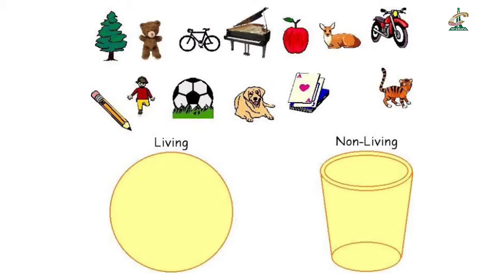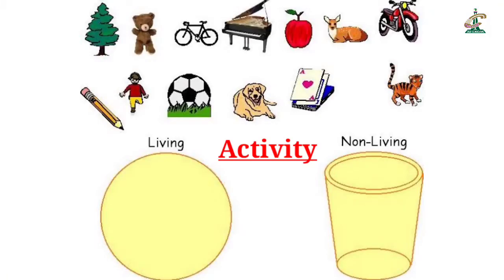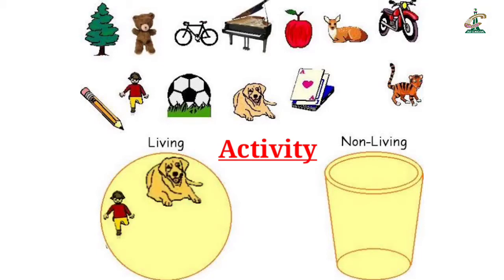You can see this picture. ہم اب ایک activity کریں گے جس میں ہم living things اور non-living things کو separate کریں گے۔ Your activity is here. First of all, we will separate living things and then non-living things. Students, اب آپ اس picture میں دیکھیں کہ living things کون سی ہیں۔ Dog, boy, deer and this tree.